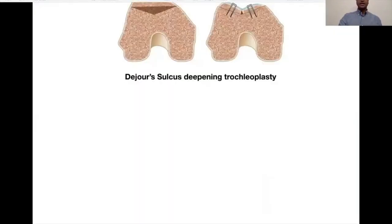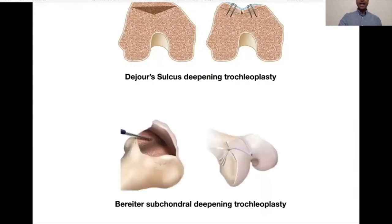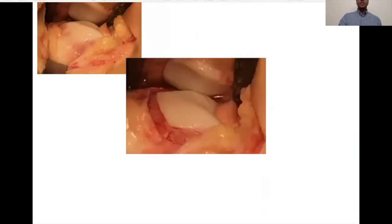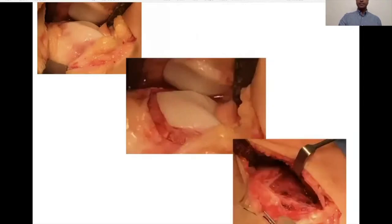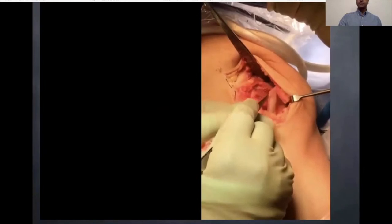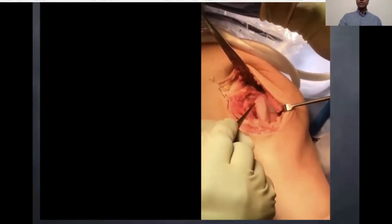Trochleoplasty is a really useful operation to deal with patellar instability related to trochlear dysplasia. There are two types described: Dejour's sulcus-deepening trochleoplasty, and subchondral osteochondral flap thinning-deepening trochleoplasty — which is what I use. You can see from the lateral side that there is a dysplastic trochlea, the margin is defined, and the trochlear flap is elevated and underlying bone is reshaped to a normal trochlea. After that, the osteochondral flap is made thin and folded over the newly formed trochlea.